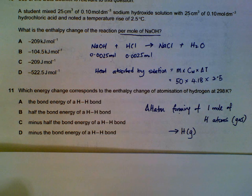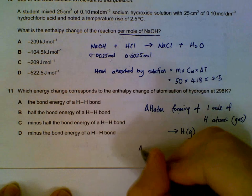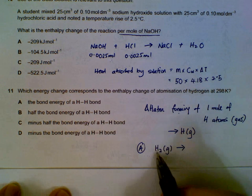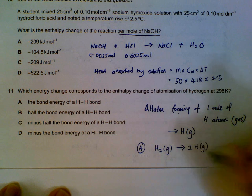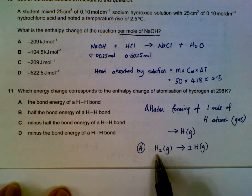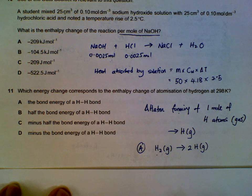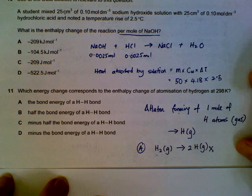Looking at our options: option A is the bond energy of a hydrogen covalent bond. Bond energy is the breaking of one mole of covalent bonds, and when we do that we actually get two moles of hydrogen atoms. Because bond energy breaks one mole of bonds and when we break one mole of bonds we get two atoms separated from each other — so that's not what we want.